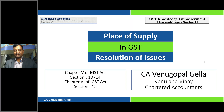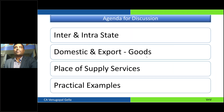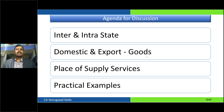Let us begin this session in understanding the need and importance of place of supply. What I am going to cover today is the transactions of what is interstate and intrastate — with respect to goods, the domestic transactions and exports; and with respect to services, the domestic transactions and international transactions. At each slide I will be discussing practical examples and the issues that arise and how you would need to deal with them.